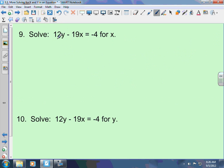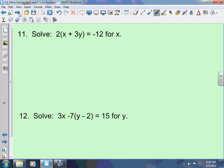Now, this is exactly the same as what we've done before. Same with 10. Okay, 11. Now you're getting into distributive property. This is nothing we haven't done before. So, the first thing you're going to do is distribute the 2. 2 times x is 2x. 2 times 3y is positive 6y, equals negative 12. We're solving for x.